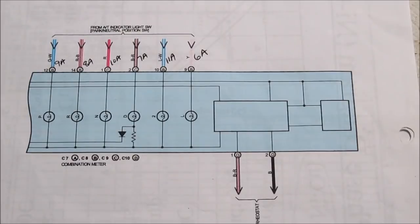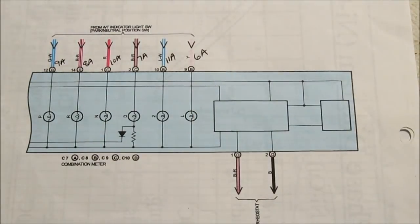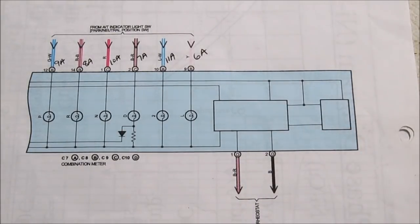Finally on page five we go through the transmission indicator lights: park, reverse, neutral, drive, two, and L. And also the connections to the rheostat which we're going to leave disconnected.